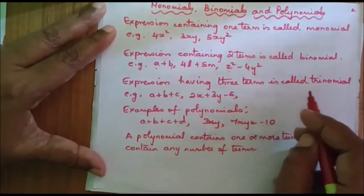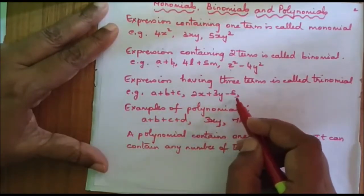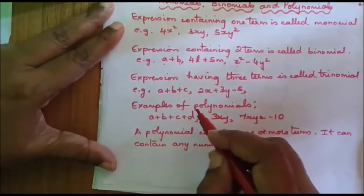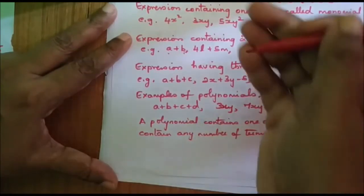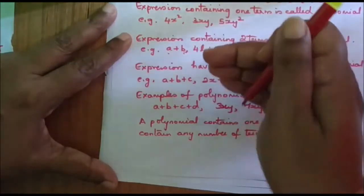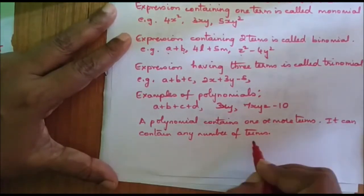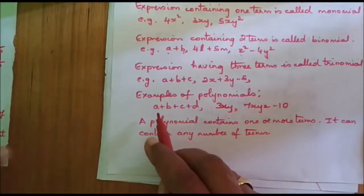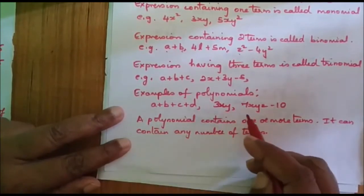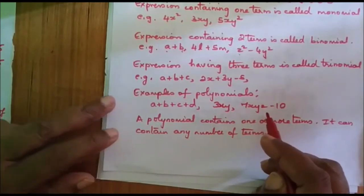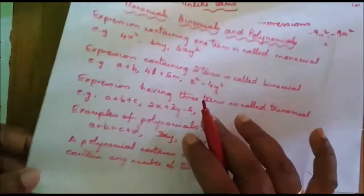An expression having three terms is called a trinomial. Examples: a plus b plus c, and 2xy plus 3y minus 5 — in this there are three terms, so they are called trinomials. Now, polynomials: monomial, binomial, and trinomial all come under polynomials. A polynomial contains one or more terms — it can contain any number of terms. For example, a plus b plus c plus t has four terms, 3xy has one term, and 7xy squared minus 10 has two terms. So a polynomial can contain one or more terms.